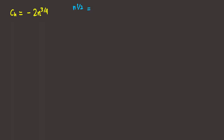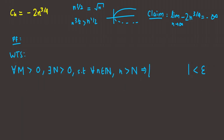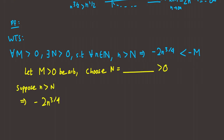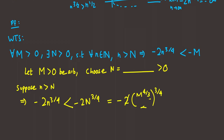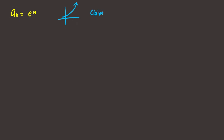For n^(3/4), the square root function is smaller and goes to infinity, so n^(3/4) also goes to infinity. But since we multiply by -2, it goes to negative infinity. Similar to the previous examples we use M, but instead of making the sequence greater than M we make it less than -M. We choose arbitrary M and N; since small n is greater than capital N, multiplying by the negative flips the inequality. We find the value N = (M/2)^(4/3), which gives us -M.